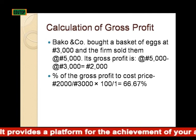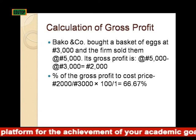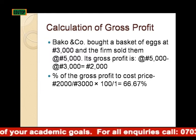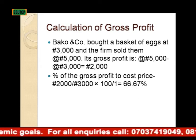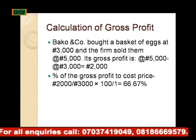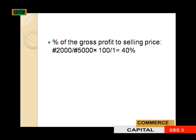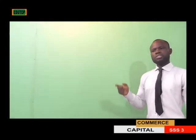To calculate the percentage of gross profit to cost price: 2,000 euros over 3,000 euros times 100, which gives 66.7 percent. To calculate the percentage of gross profit to selling price: 2,000 euros over 5,000 euros times 100, which gives 40 percent.